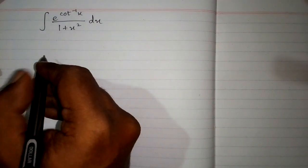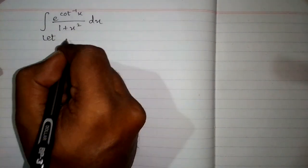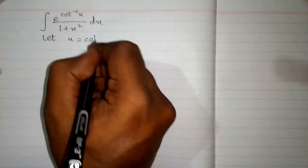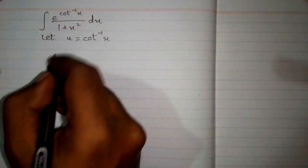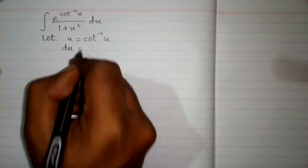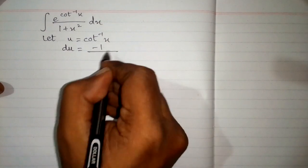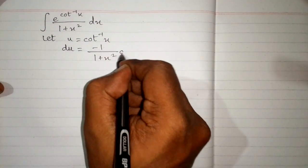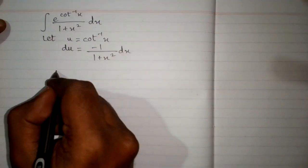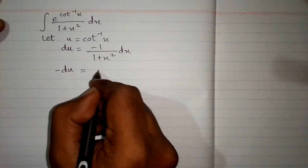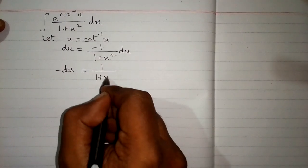In this video we will integrate e to the power inverse cot x upon 1 plus x square. We will do this integration by substitution. Let u equal inverse cot of x, so the differential du is equal to the derivative of inverse cot of x, which is minus 1 upon 1 plus x square, multiplied by dx. Multiplying both sides by minus, we have minus du equals 1 upon 1 plus x square dx.